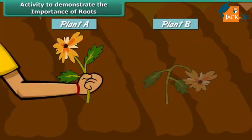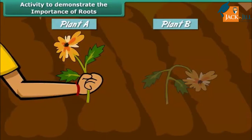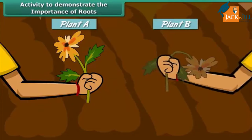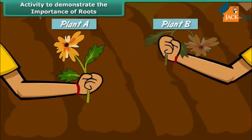Now try pulling the two plants out from the soil. Plant A is firmly attached to the soil because of its roots, so it is difficult to pull it out. However, plant B, which has no roots, comes out easily. This shows that roots anchor plants firmly in the soil.